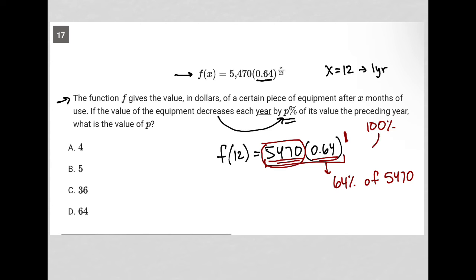And then a year later, we find ourselves down to 64%, which means we've lost minus 36%, which means our answer has to be choice C. That is what it has to be.